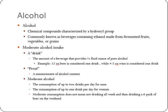Finally in chapter one, let's briefly go over alcohol. Alcohol is a chemical compound characterized by a hydroxyl group, which is essentially a group attached to a molecule that contains hydrogen and oxygen — notice the word hydroxyl seems to come from the same root as hydrogen and oxygen. It's commonly known as beverages containing ethanol made from fermented fruits, vegetables, or grains. Fermented fruits give you brandy, cognac, or wine; vegetables give you vodka from fermented potato; fermented grains give you bourbon, scotch, or whiskey.